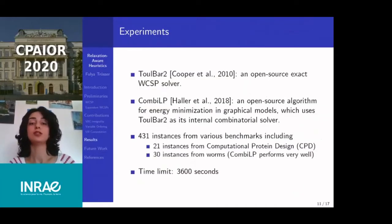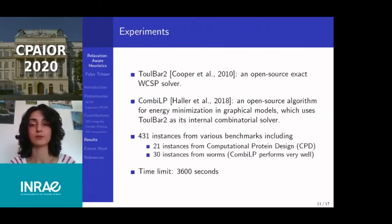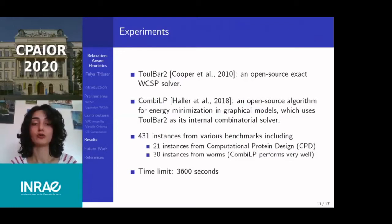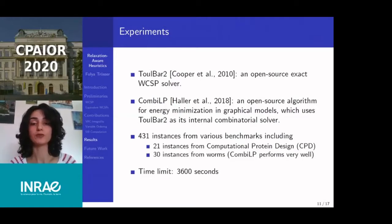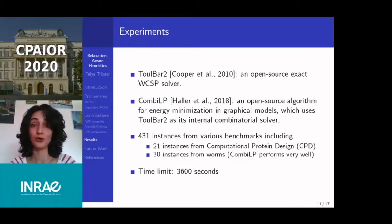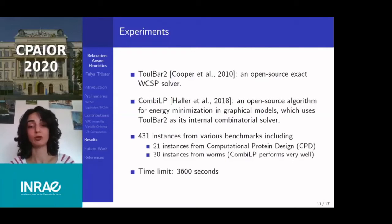We ran experiments implementing both heuristics in Toolbar 2, an open-source exact solver for WCSPs. We compared our work with CombiLP, developed by Hala et al., an open-source algorithm for graphical models based on similar ideas that uses Toolbar 2 as its internal combinatorial solver. We ran experiments on 431 instances, including 30 instances from Worms for which CombiLP is the state-of-the-art. The time limit was one hour. We do not use any ILP solver because Toolbar 2 already performs much better than CPLEX on most of these problems.